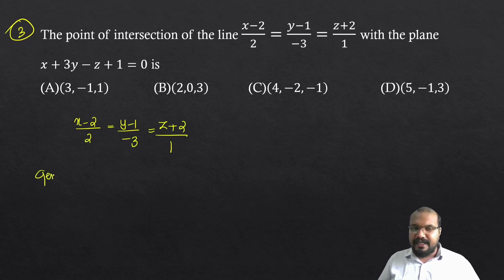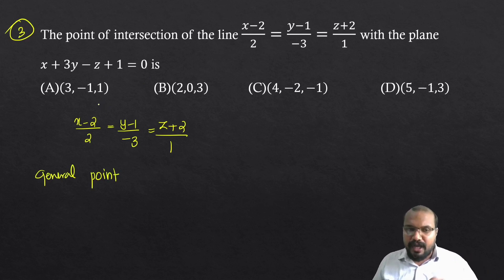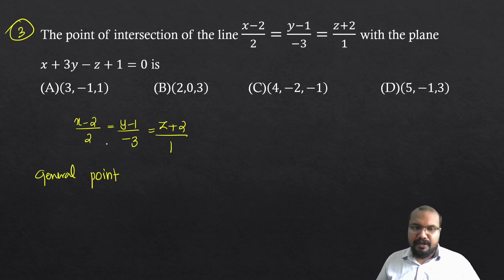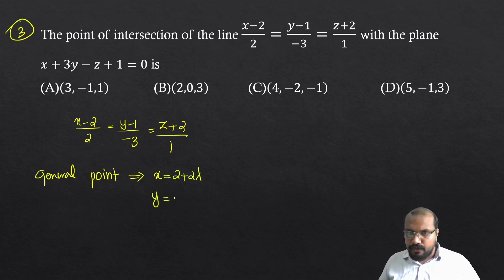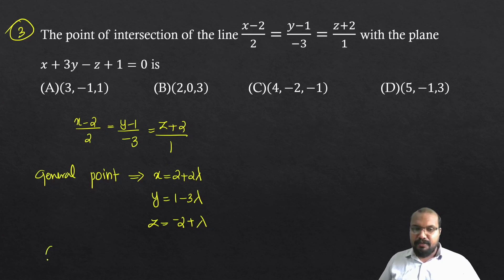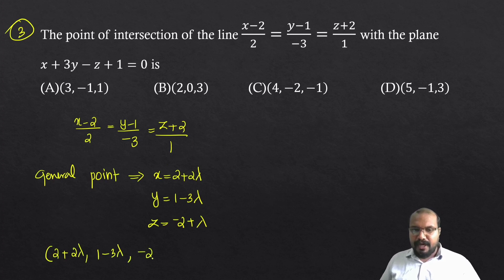For the line (x-2)/2 = (y-1)/(-3) = (z+2)/1, we select a general point using parameter lambda. Setting (x-2)/2 = lambda: x = 2 + 2lambda, y = 1 - 3lambda, z = -2 + lambda. The general point on the line is (2 + 2lambda, 1 - 3lambda, -2 + lambda).